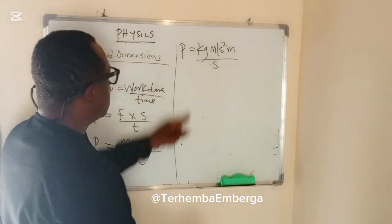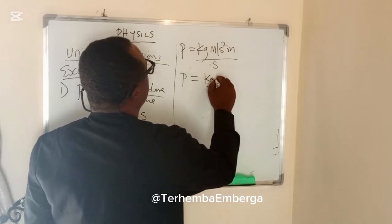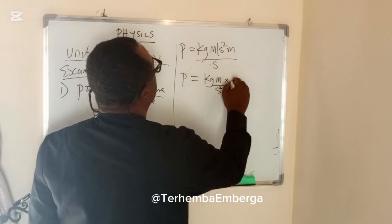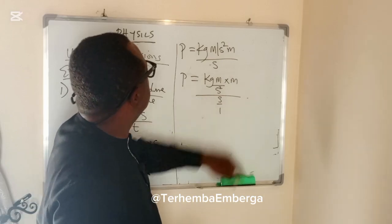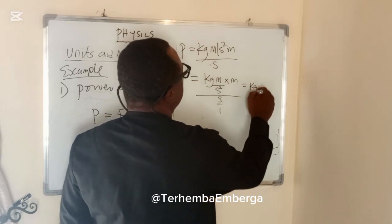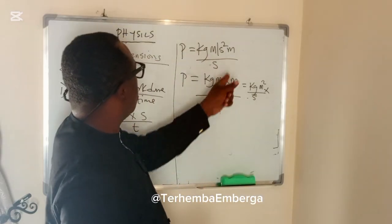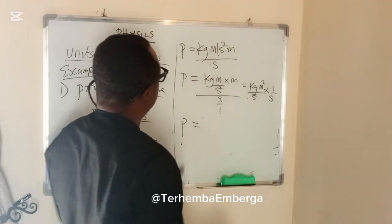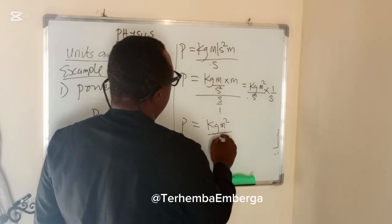We can write this down. P is equal to kg. Meter per second squared can be written as meter over second squared, times meter, divided by seconds. M times M is M squared. So we can write this as kg·m² over s², times 1 over s.